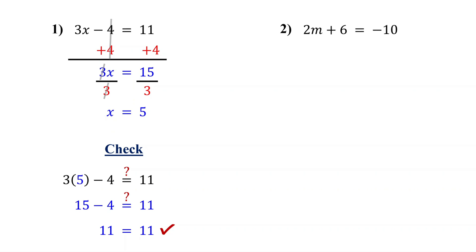First, isolate the variable term. Notice that 6 is being added to 2m. So to isolate 2m, we do the opposite of addition: we subtract 6, and of course we subtract from both sides to keep the equation balanced. Now on the left, 6 minus 6 is 0 — they cancel out, leaving just 2m. What is negative 10 minus 6? That is right: negative 16.